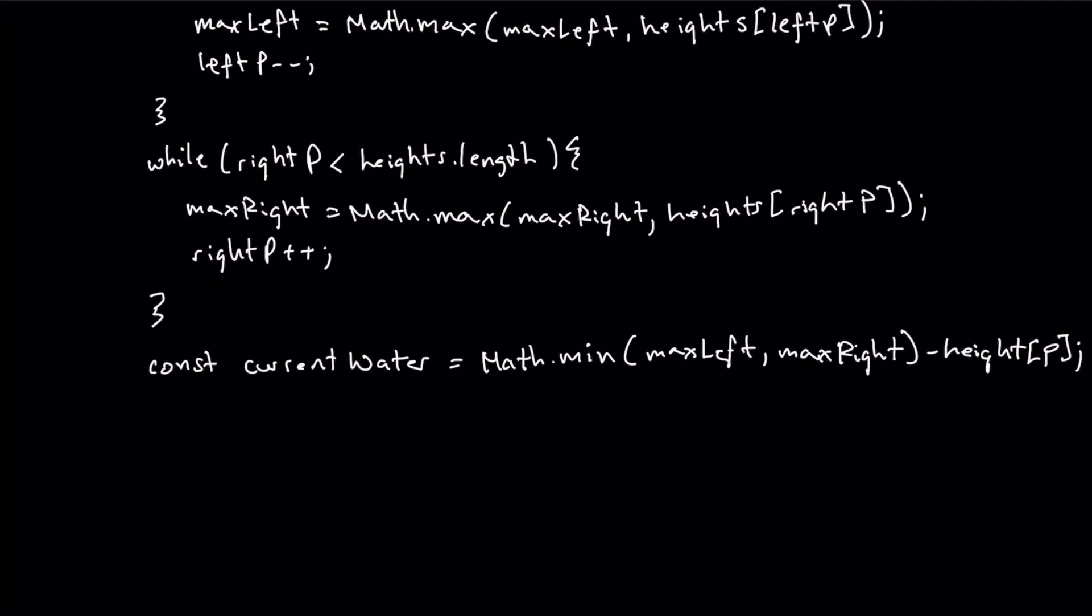Now what I'm going to do is we need to now see and figure out whether or not we want to add it to our total water. So here we can just use an if statement. We can say that if our current water is greater than or equal to zero then I want to add that value to total water. So I'll say total water plus equals current water.